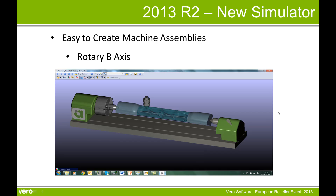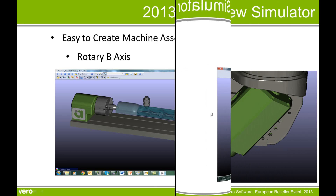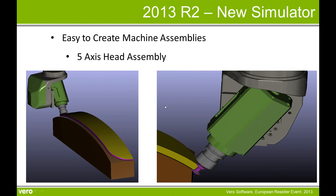There is also a supporting movie showing you how you can create this rotary B axis, complemented by another movie showing how easy it is to create machine assemblies, including this 5 axis head assembly.